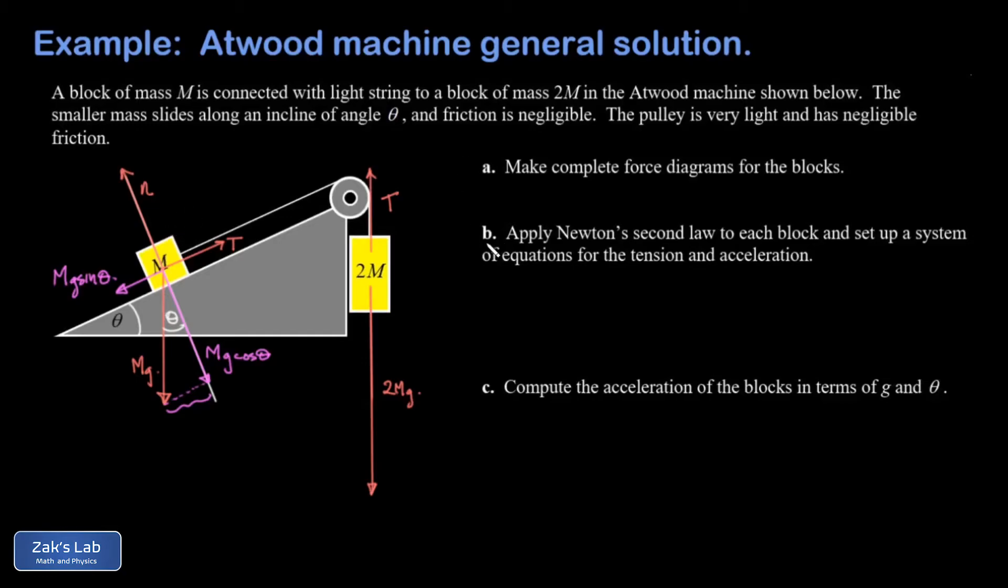Now, before I get into part B, applying Newton's second law to each of these blocks, we need to be clear about the coordinate system we're using to analyze the motion for each block. And this system is going to evolve in this direction. 2M is going to fall. M is going to be dragged up the ramp. So that's the direction of the actual acceleration, and I'm going to call that positive for the analysis of each of these masses. It's important that your acceleration has the same sign for each mass, because we don't want the letter A to stand for a positive thing in one case and a negative thing in the other. Now we apply Newton's second law to each of these masses.